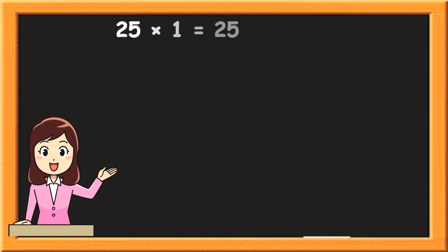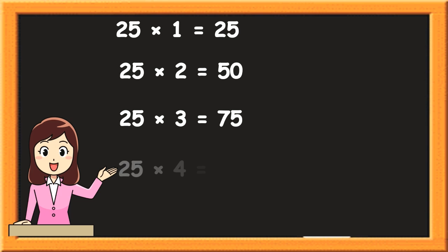25 1s are 25. 25 2s are 50. 25 3s are 75. 25 4s are 100. 25 5s are 125.